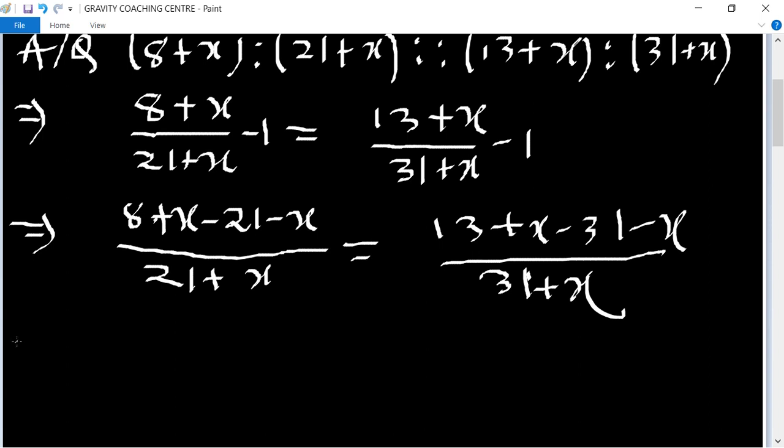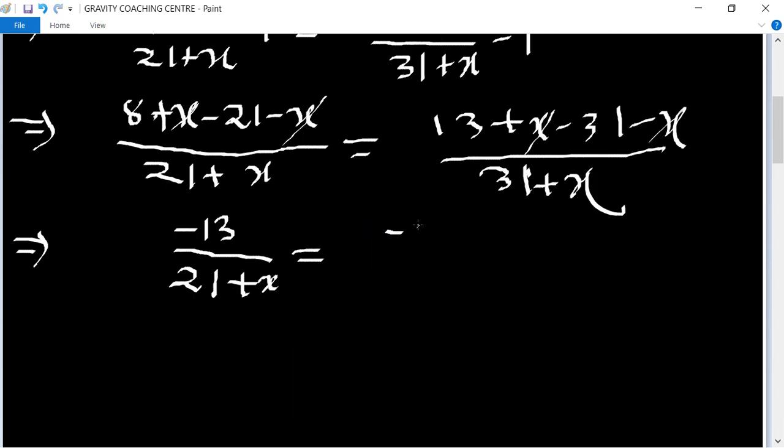Now cancel x and x, so minus 13 upon 21 plus x equals minus 18 upon 31 plus x.